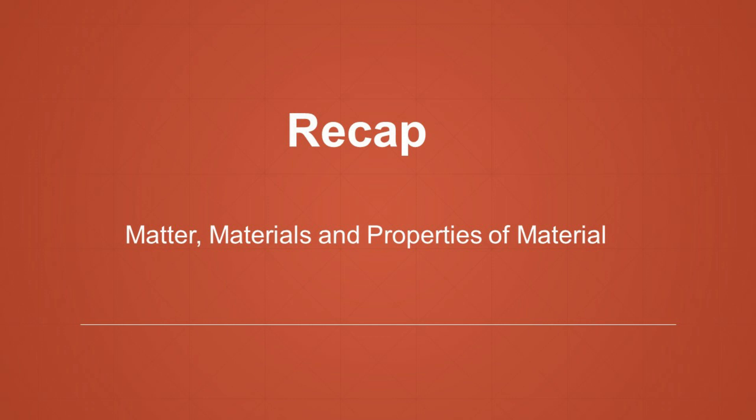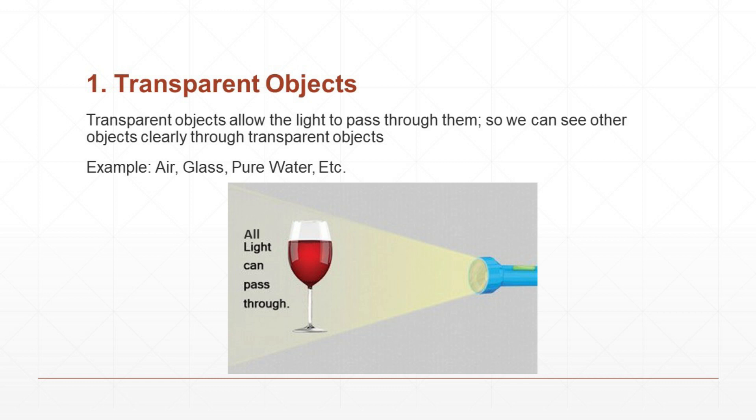Let us see how different objects behave with light. First, let us learn about transparent objects. The spelling is T-R-A-N-S-P-A-R-E-N-T. Transparent objects allow the light to pass through them, so we can see other objects clearly through transparent objects.